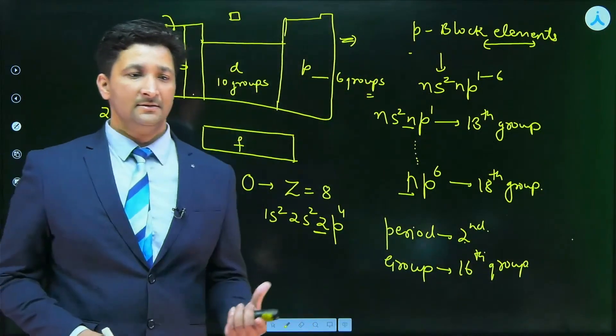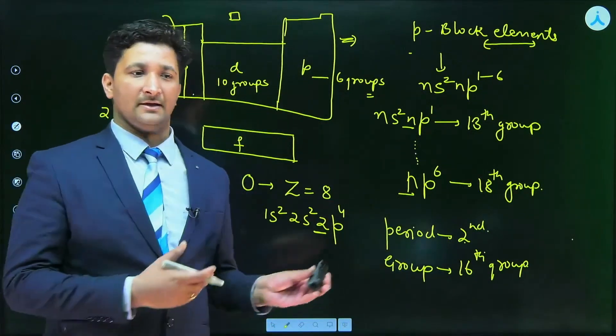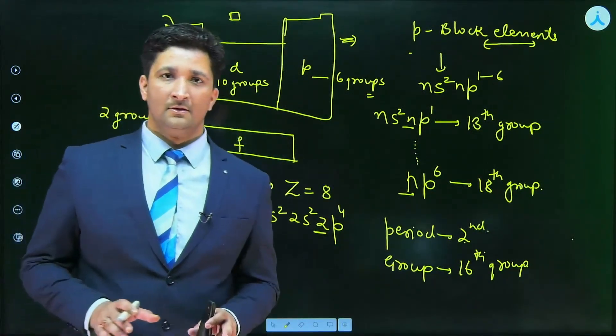And as we have already discussed, if the final electron enters P subshell, then definitely it is going to be in P block.